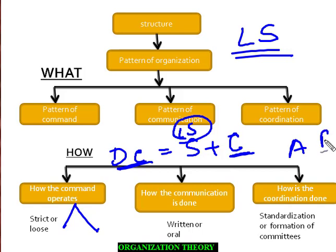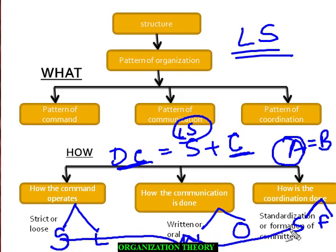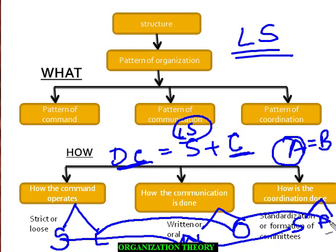The two structures of A and B can be the same, but the command can be strict or loose. Communication can be written or oral. Coordination can be standardized or achieved through formation of committees. If organization A has strict command, written communication, and standardized coordination, that is one particular organization design. And B with loose command, oral communication, and committee formation is a different design. So we have two organizations A and B whose structure is the same but organization design is different.